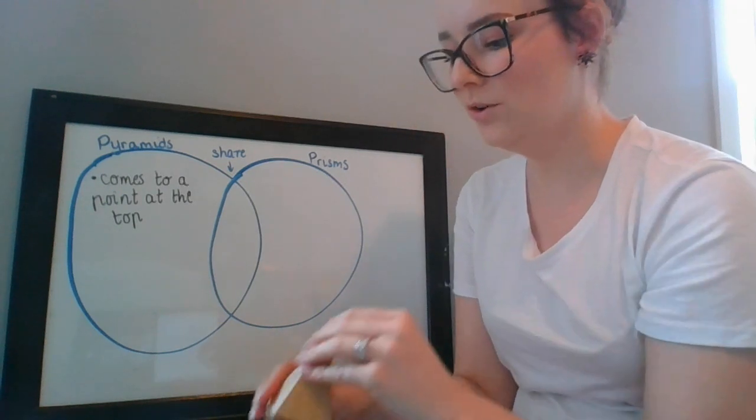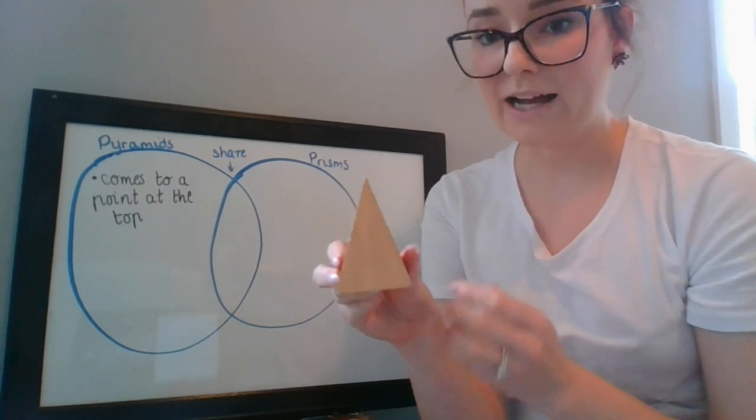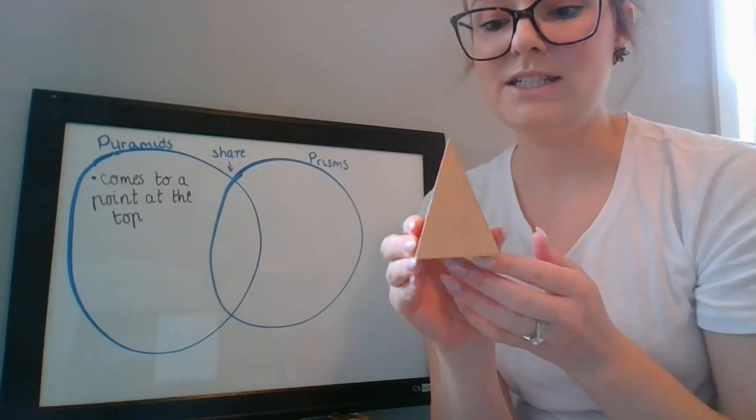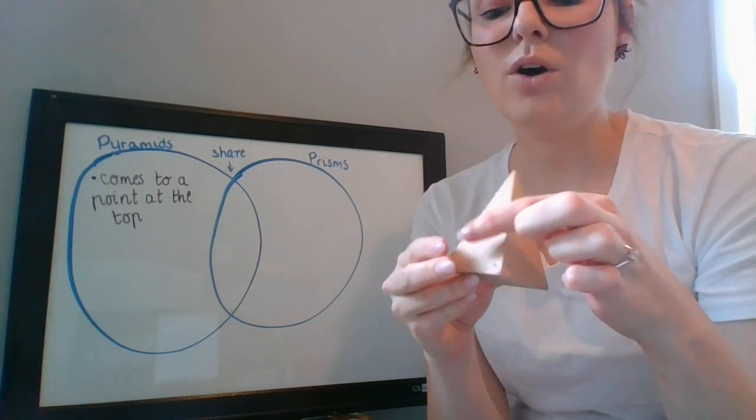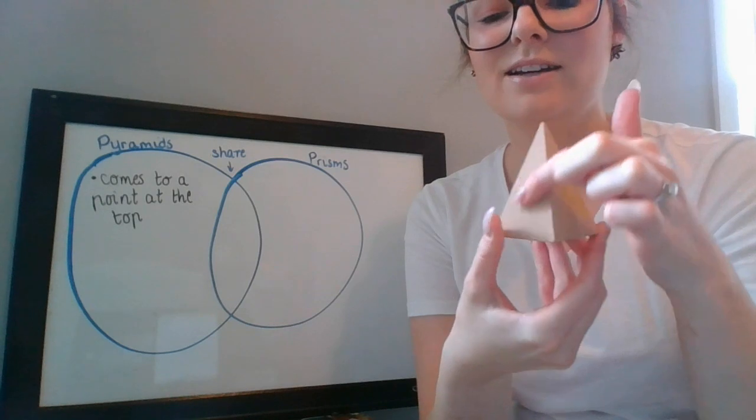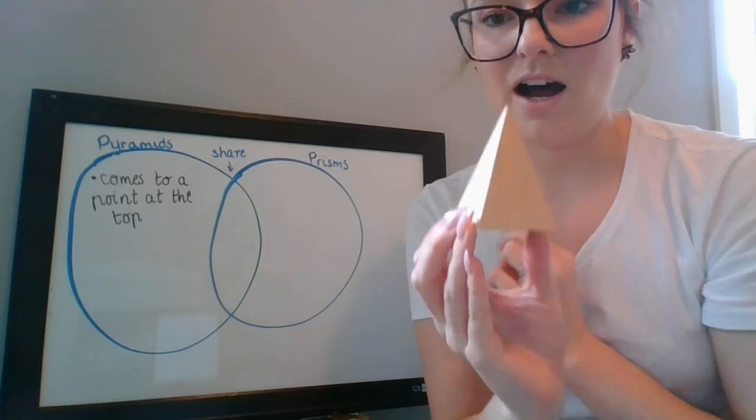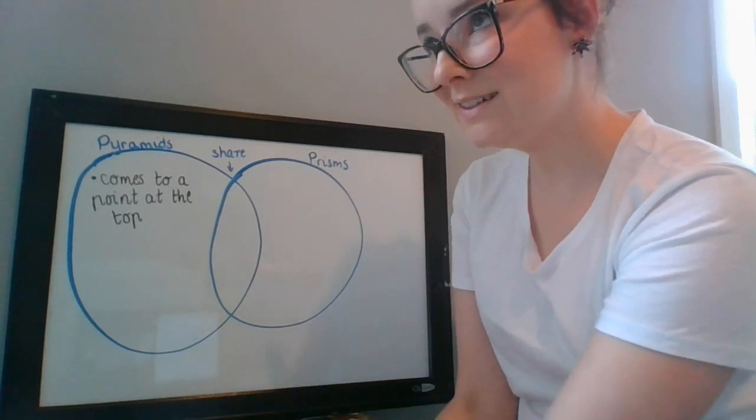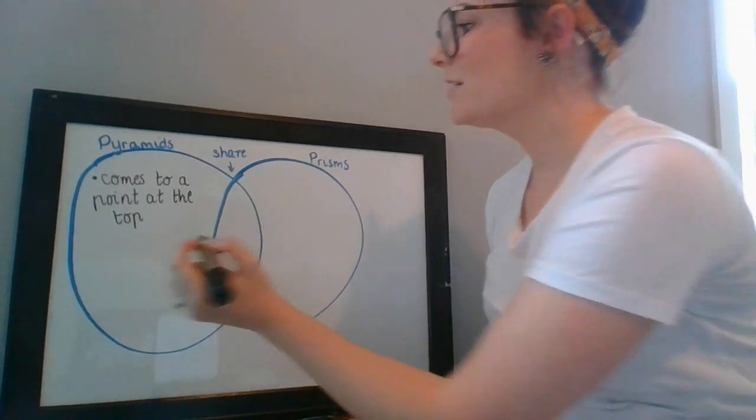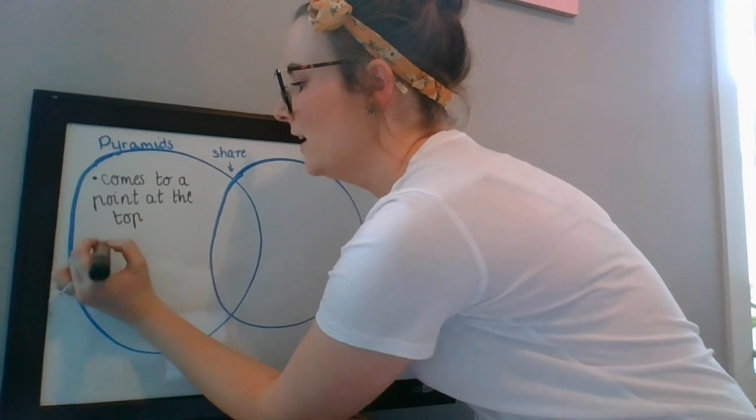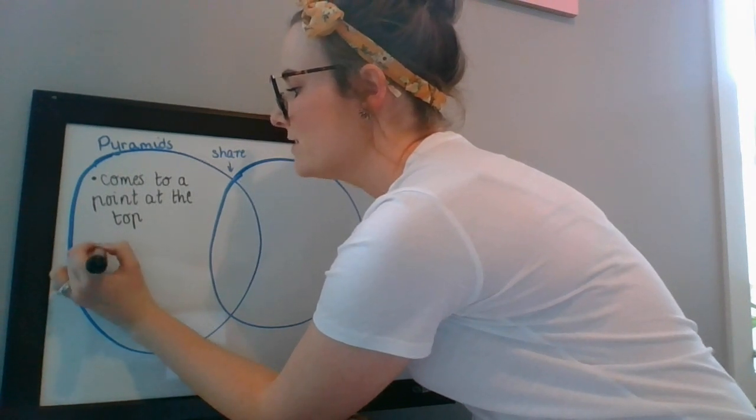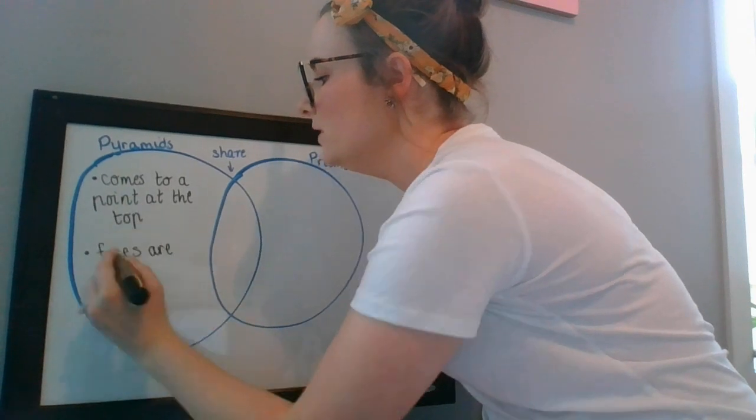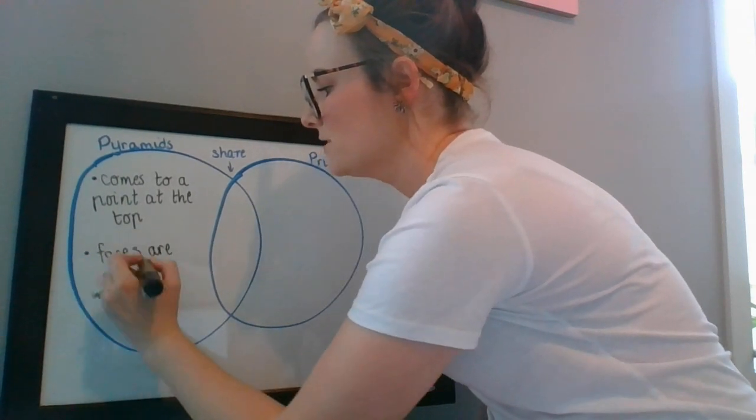What else do we know about pyramids? How can we tell it's a pyramid and not a prism? Okay, we did say all of our sides, other than our base, all of the sides on a pyramid are the shape of a triangle. So we can say our faces are all triangles.